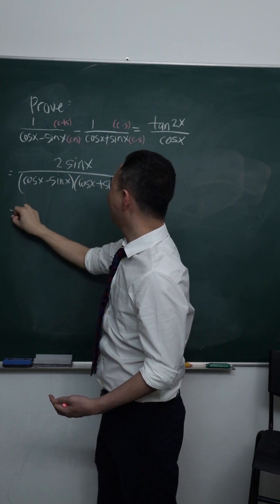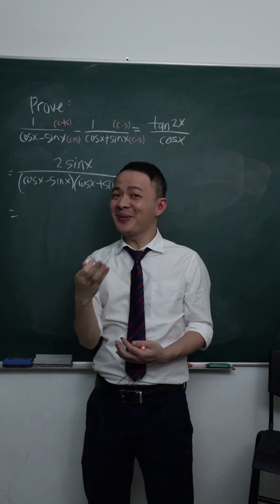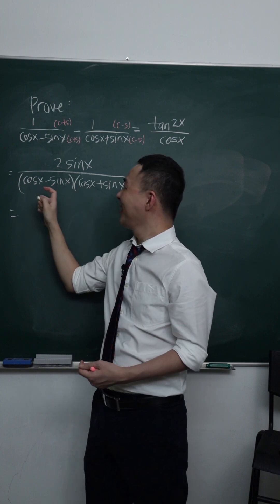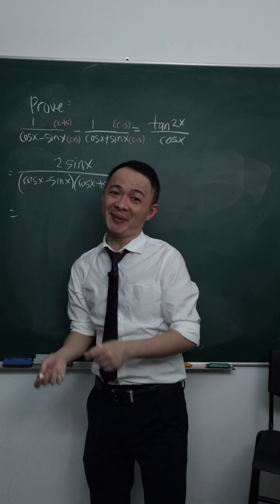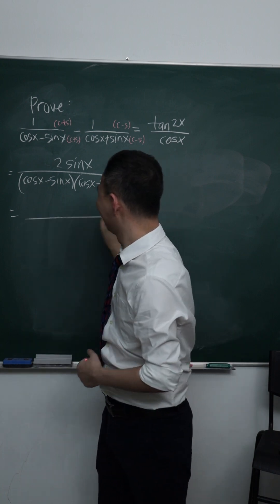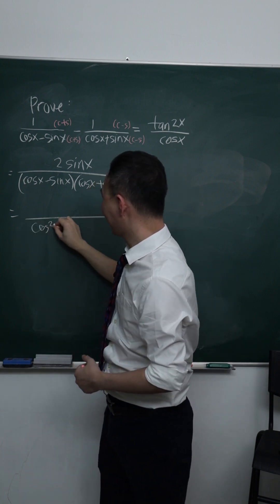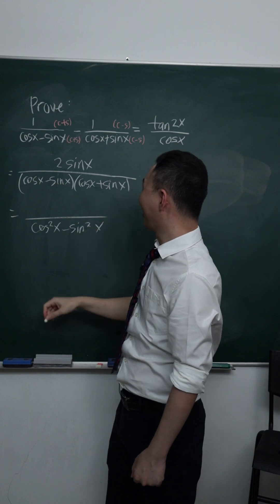Okay, so the denominator is quite easy, because you should be able to see this is cos minus sin, A minus B multiplied by A plus B. What do we get? We get A squared minus B squared, isn't it? So we get cos squared x minus sin squared x. Okay.